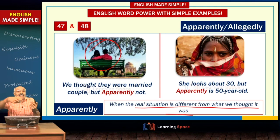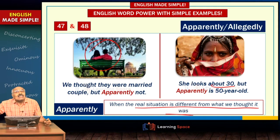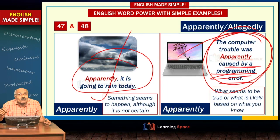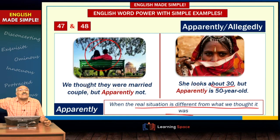'Apparently' can be used under three circumstances: one, something may happen — apparently there may be thundershowers this evening; two, apparently something was caused by a certain error — you think it is true but it's not 100% certain; and three, most importantly, reality is something different from what we thought — we thought they were a married couple, but apparently not; we thought she is 30 years old, apparently she is 50.